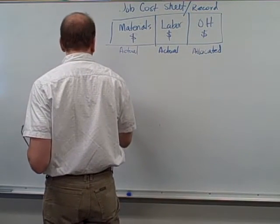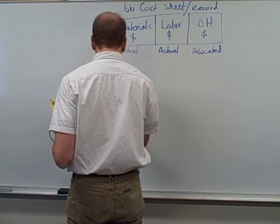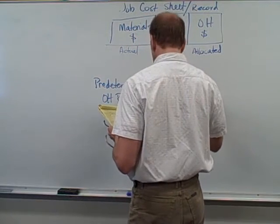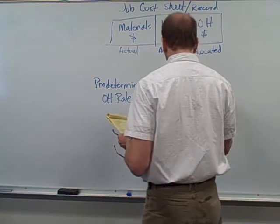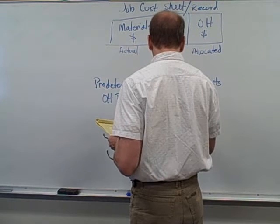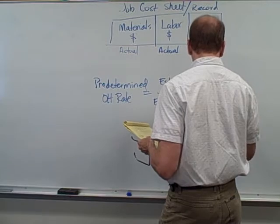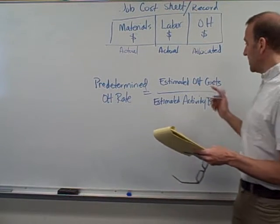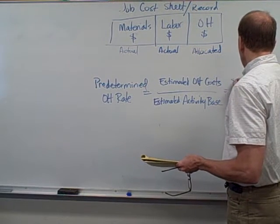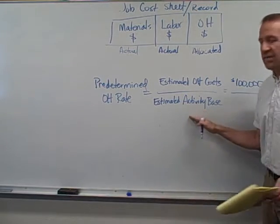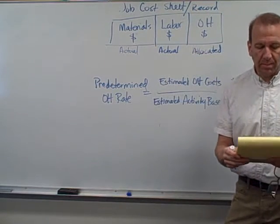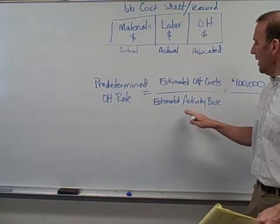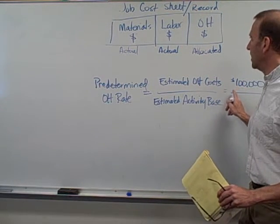We're going to have a predetermined overhead rate. That is calculated by taking estimated overhead cost for the time period and dividing it by the estimated activity base. Estimated overhead cost divided by estimated activity base. So let's say our estimated overhead costs are $100,000. Our activity base is how we're going to allocate this. There can be all sorts of activity bases — some examples are direct labor hours, direct labor costs, square footage, and machine hours. Those are some common ones. It's just a way for us to allocate this overhead into our job.